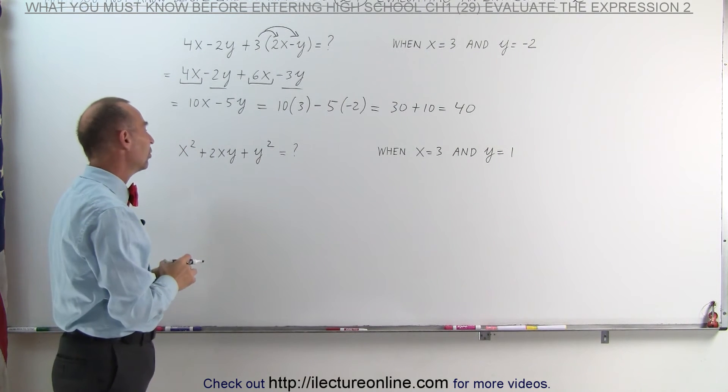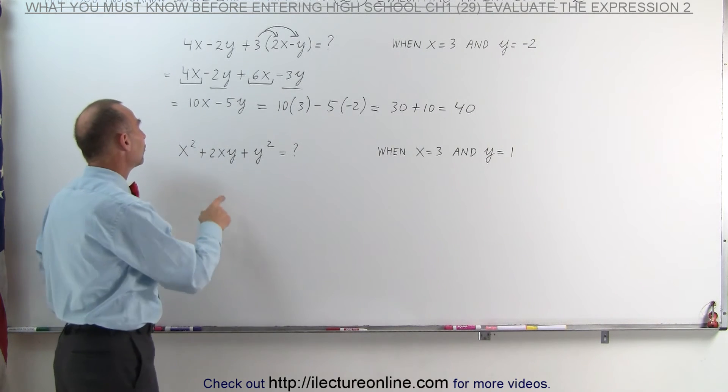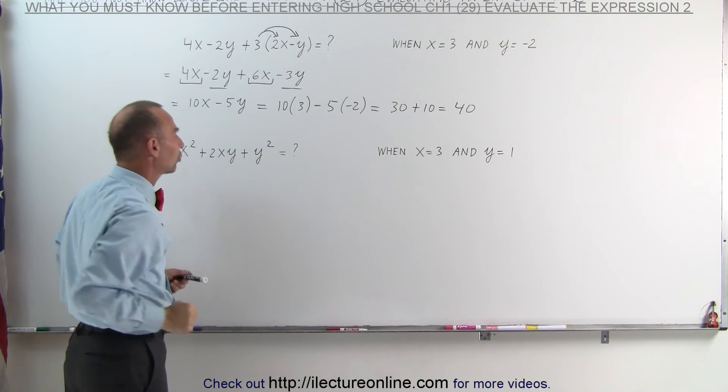Here's our second expression. Notice again we have two unknowns, x and y. Also notice that we have a term where x is squared and a term where y is squared.